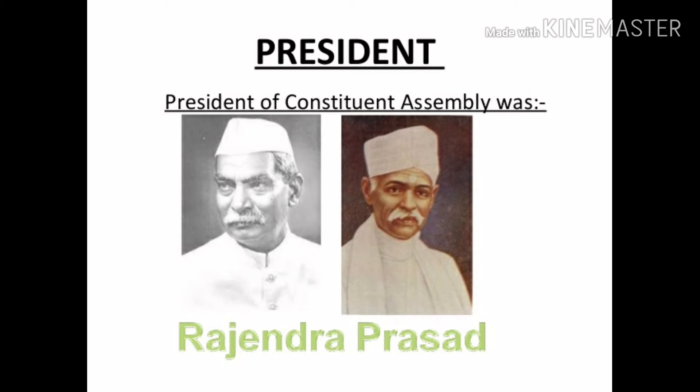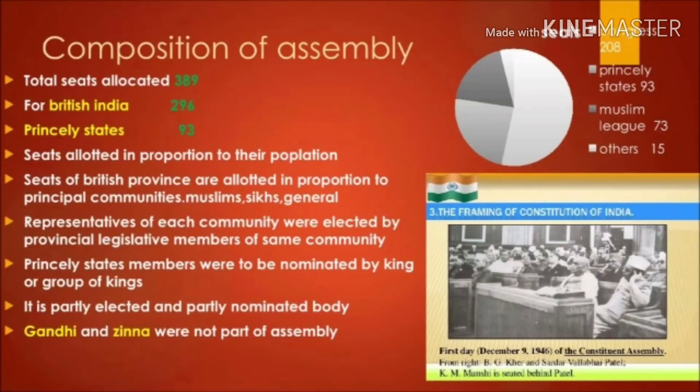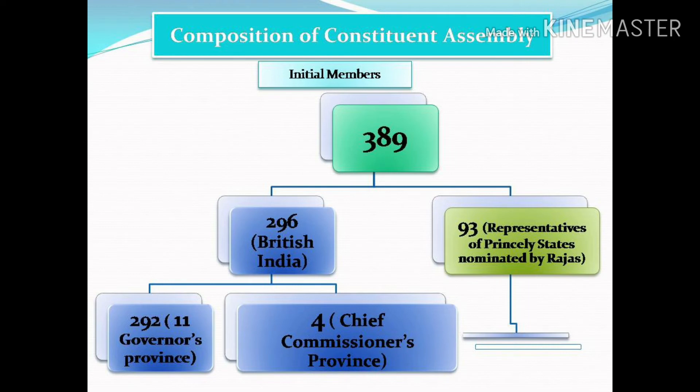But after his death, Dr. Rajendra Prasad became the president of the constitutional assembly. Regarding the composition of the assembly, it consisted of 389 seats, of which British India captured 296 and the Princely States captured 93 seats.